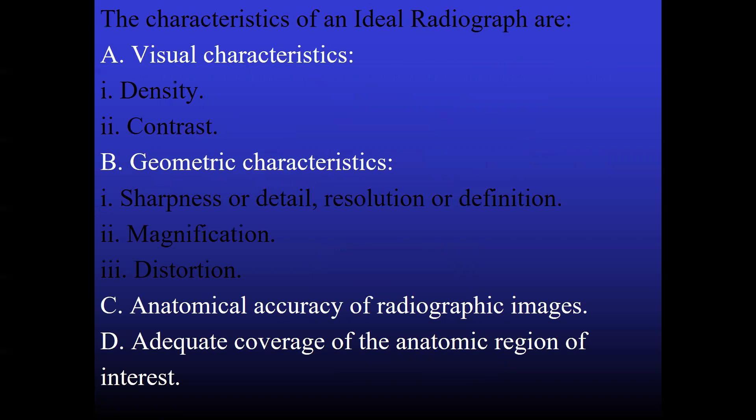The characteristics of an ideal radiograph are: visual characteristics, that is, it includes density and contrast. Geometric characteristics, which includes sharpness or detail, resolution or definition, magnification and distortion. Anatomical accuracy of radiographic image. Adequate coverage of the anatomic region of interest. So these are the characteristics of an ideal radiograph. If you are able to maintain all these characteristics, I'm sure that you'll be able to get an ideal radiograph.